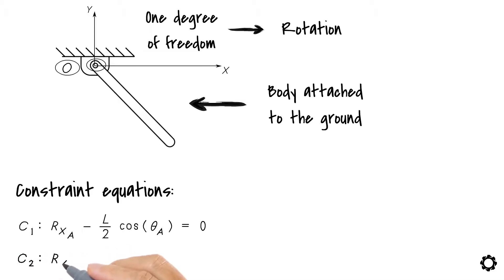C2 is Rya minus L by 2 sin theta A equals 0. For our purposes, we will collect these constraint equations into a vector of constraints, something like this: C equals C1 C2 transpose.